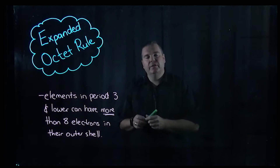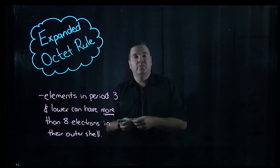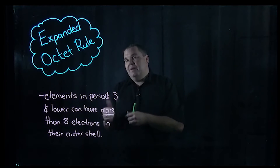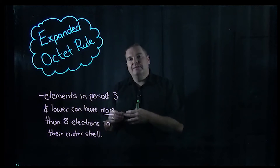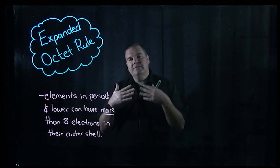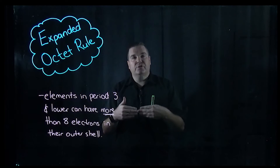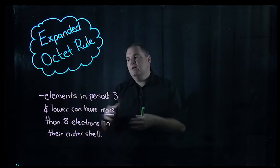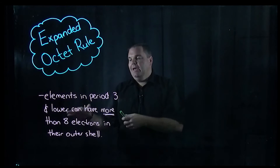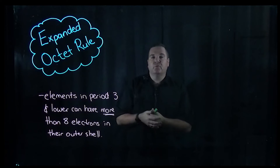Welcome to today's video on the expanded octet rule, which is used when drawing the structures of molecules. The expanded octet rule relates to elements that are in period three or below, because elements in period three have three electron shells and the third electron shell can hold up to 18 electrons. So elements in period three, four, five, six, and seven can have more than eight electrons in their outer shell.